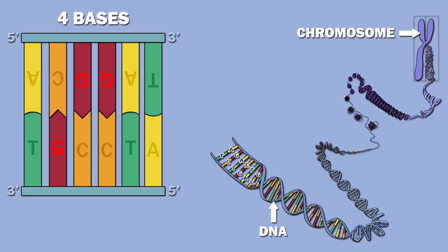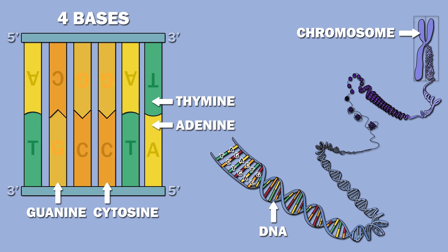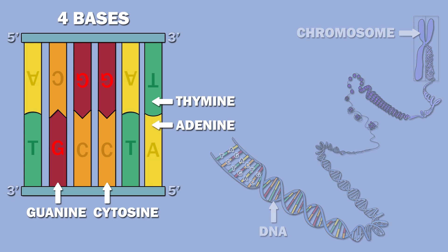DNA is made up of four bases: cytosine, guanine, thymine, and adenine. Cytosine base pairs with guanine, and thymine base pairs with adenine.